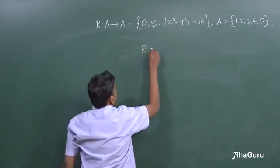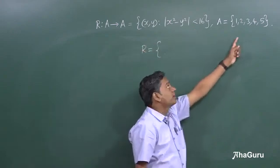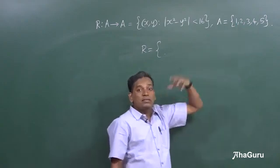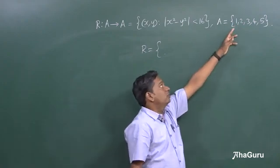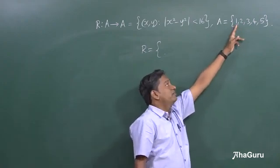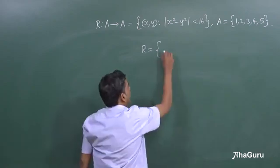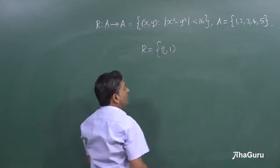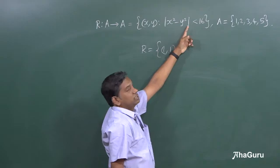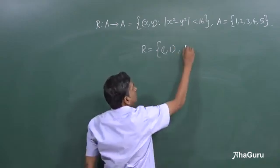Let us try and list the kind of elements that will be there in R. We know that R is a subset of A cross B. Let us take for example from 1, if you take 1 cross 1, 1 comma 1 will obey this condition because modulus of this is clearly less than 16.